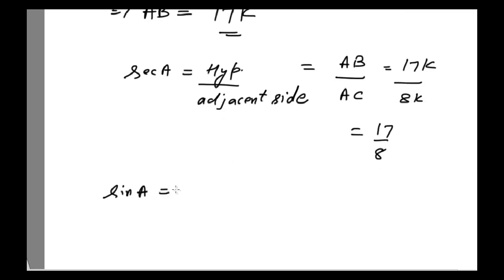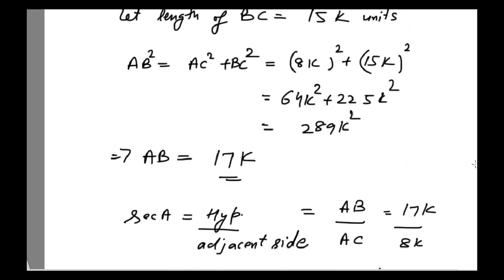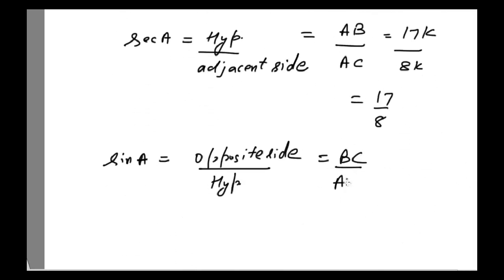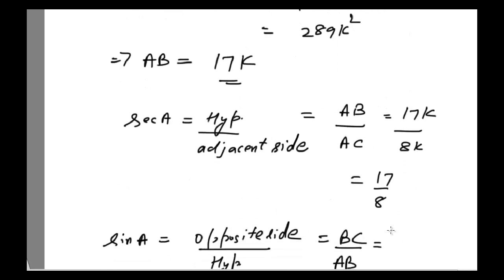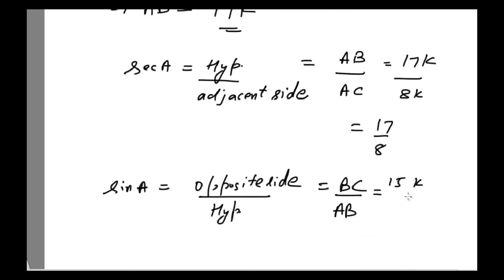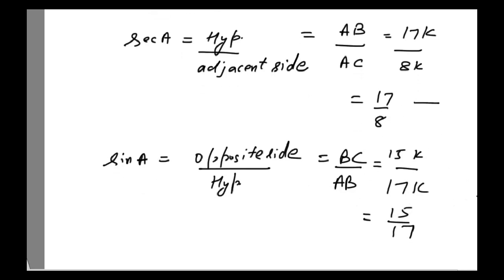We also need to find sine A. Sine A is equal to opposite side divided by hypotenuse. The opposite side to angle A is BC and the hypotenuse is AB. The length of BC is 15K and AB is 17K, so sine A equals 15 divided by 17. Therefore, secant A equals 17/8 and sine A equals 15/17.